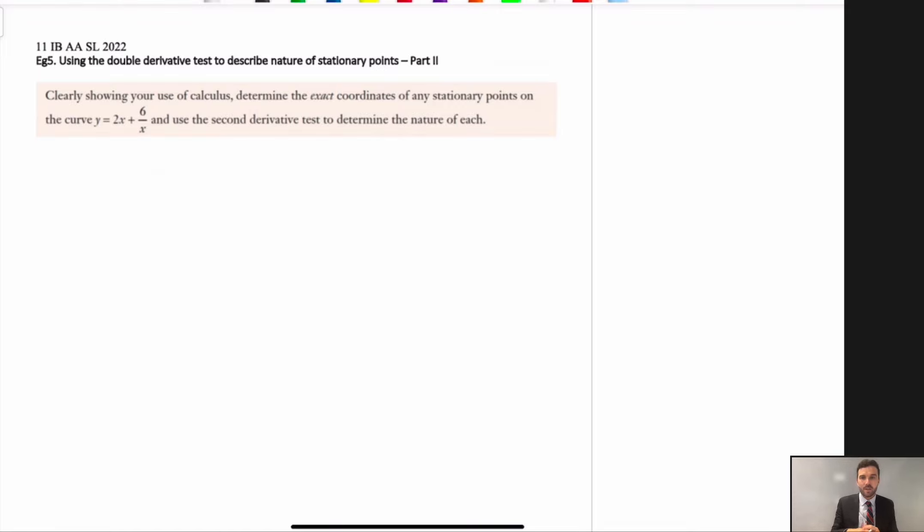Now, this question here is using the double derivative test again, and we have a function, y is equal to 2x plus 6 on x. Clearly showing your use of calculus, determine the exact coordinates of any stationary points on the curve y equals 2x plus 6 on x, and use the second derivative test to determine the nature of each.